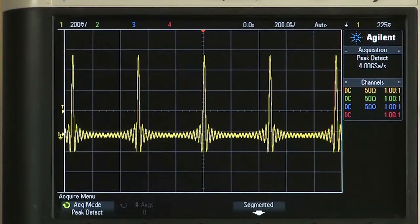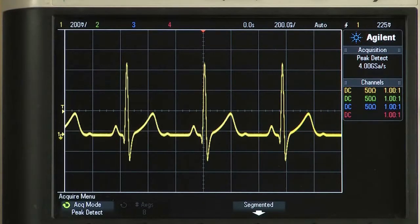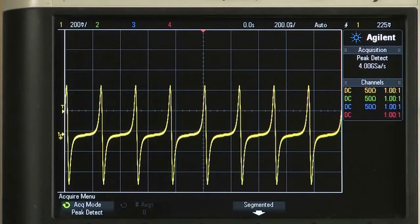You can define any waveform shape and length using the TrueForm arbitrary waveform capability. Arbitrary waveforms of 4 million points per channel, or optionally 64 million points per channel, can be generated with sample rates as high as 1 giga sample per second.